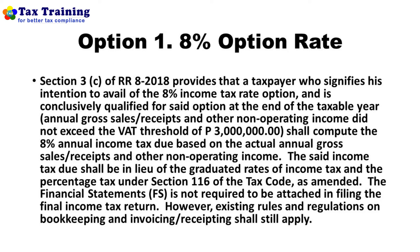If the blogger is conclusively qualified for the eight percent option at the end of the taxable year — meaning the annual gross sales, receipts, and other non-operating income did not exceed the VAT threshold of three million pesos — the blogger shall compute the eight percent annual income tax due based on the actual annual gross sales or receipts and other non-operating income. This eight percent tax is in lieu of the graduated rates of income tax and the percentage tax under Section 116 of the Tax Code.